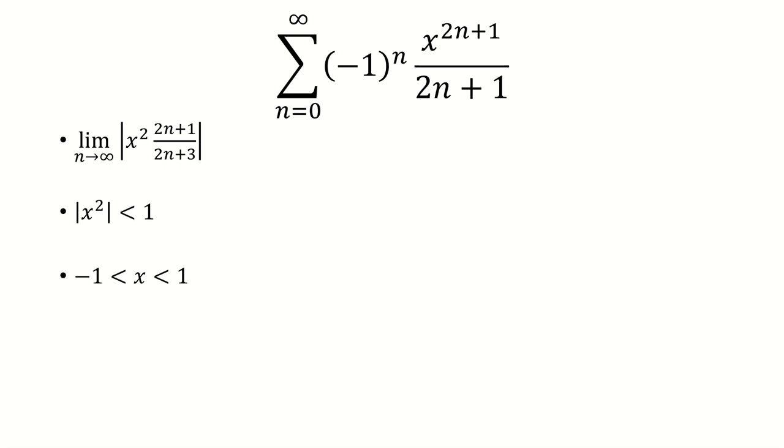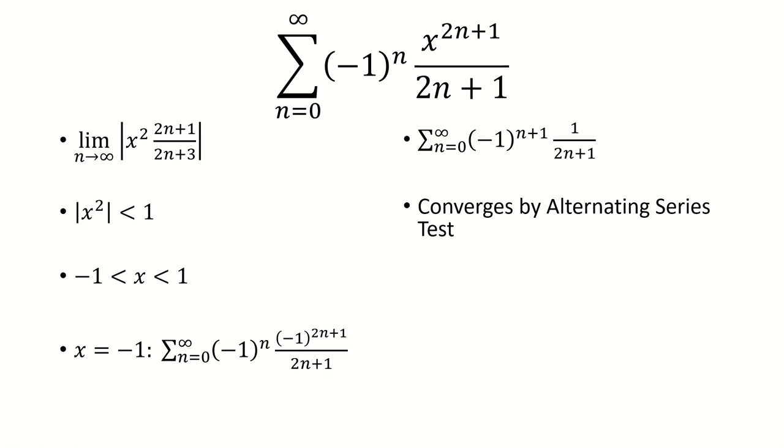So now we just need to test the endpoints. If I plug in x equals negative 1, I have negative 1 raised to the nth times negative 1 to the 2n plus 1 over 2n plus 1. And if I were to add the exponents, this is really negative 1 to the 3n plus 1. So this is a typo, by the way. This should be a 3n plus 1. And this converges by the alternating series test because the sign alternates between positive and negative. The limit goes to 0, and 1 over 2n plus 1 is decreasing.